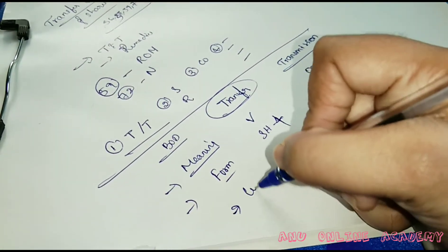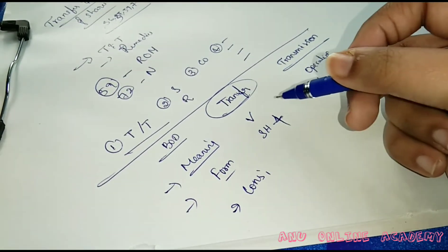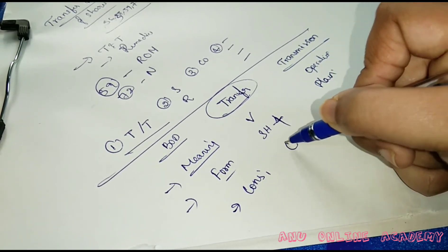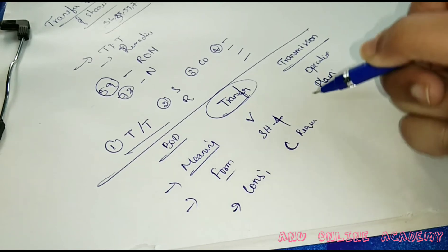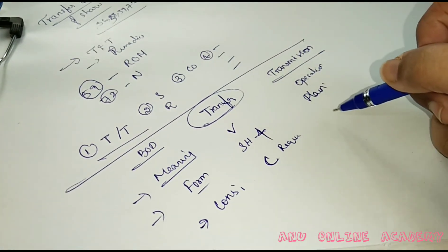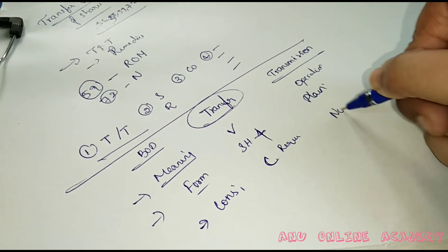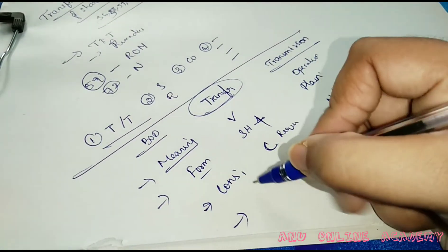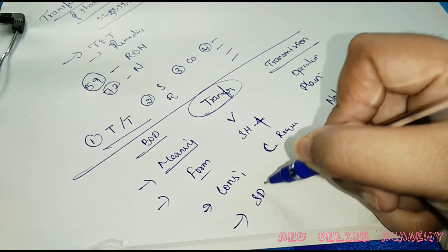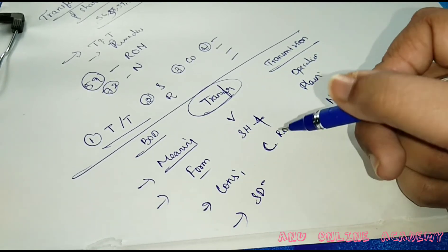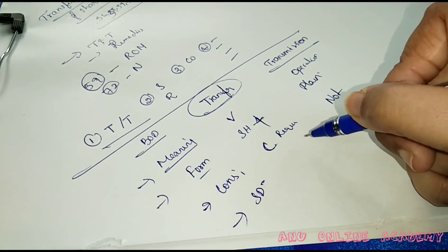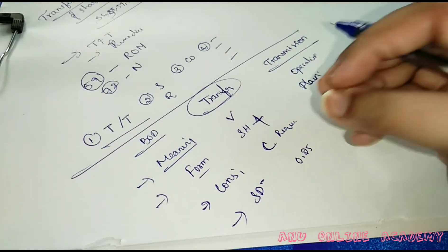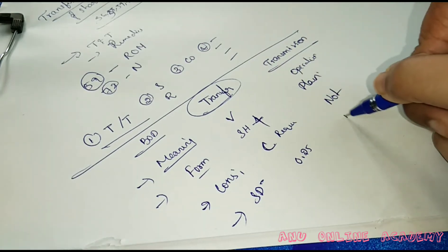Need of consideration: in transfer of shares, consideration is required. In transmission, it is not applicable. Need of stamp duty: stamp duty is payable at the rate of 0.25 for every 100 rupees or part of 100. In transmission, stamp duty is not applicable.